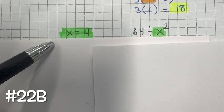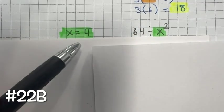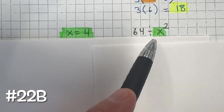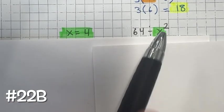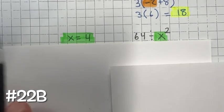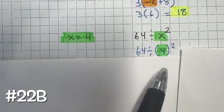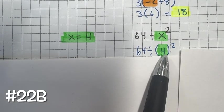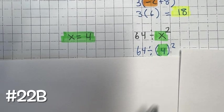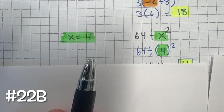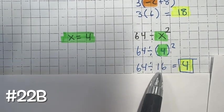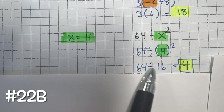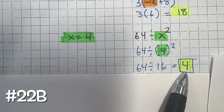For problem 22b, evaluate the expression when x equals 4. Substitute 4 for x: now we have 4 squared, or 4 to the second power, which means 4 times 4, equaling 16. Then do 64 divided by 16, which is 4.